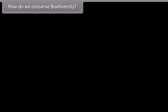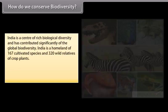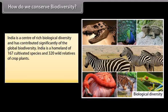How do we conserve biodiversity? India is a center of rich biological diversity and has contributed significantly to global biodiversity. India is a homeland of 167 cultivated species and 320 wild relatives of crop plants.